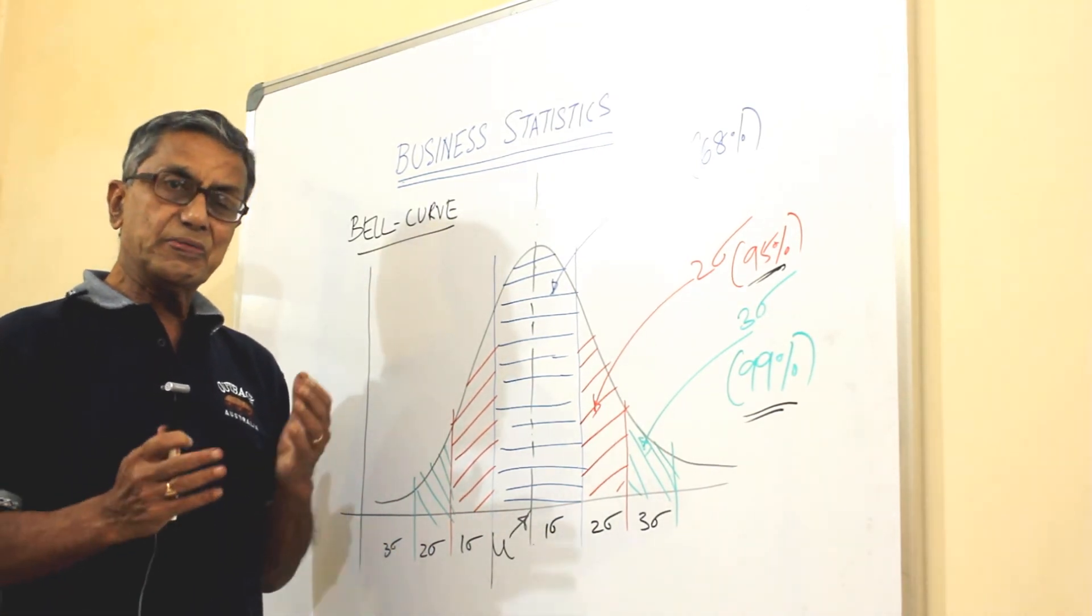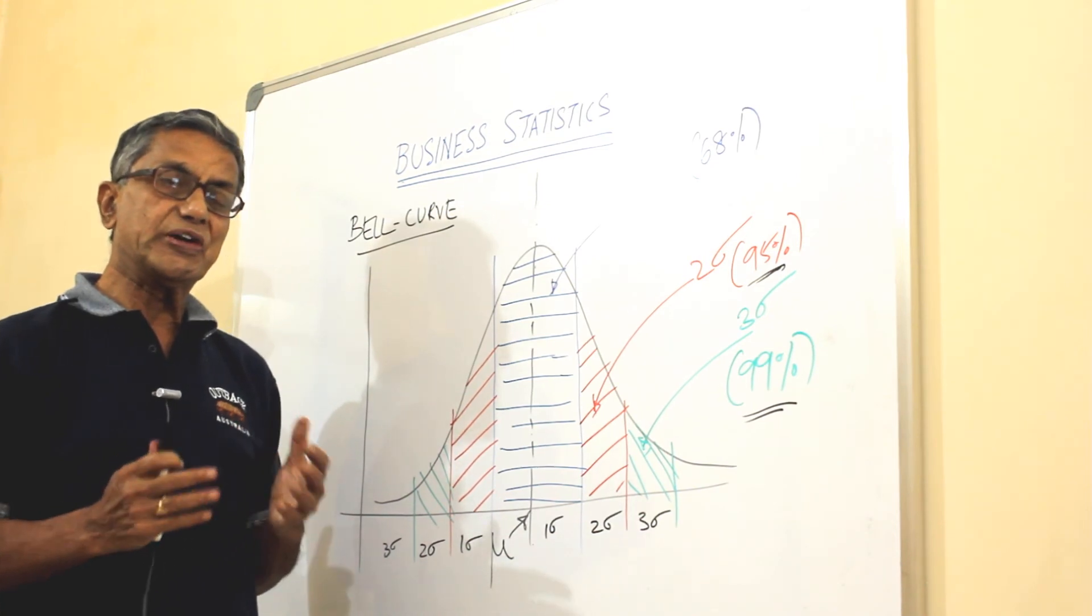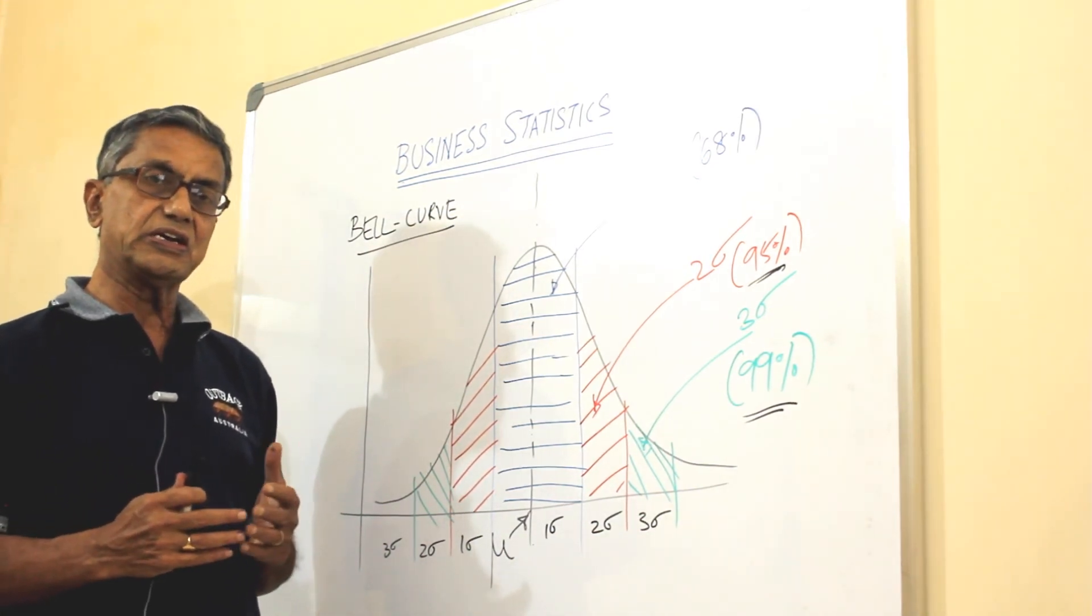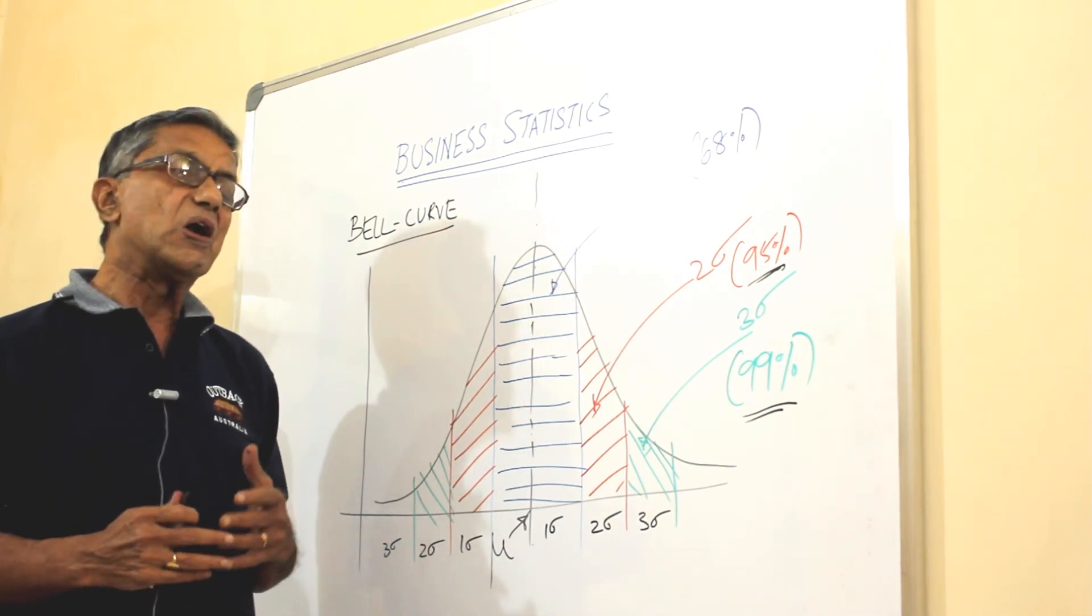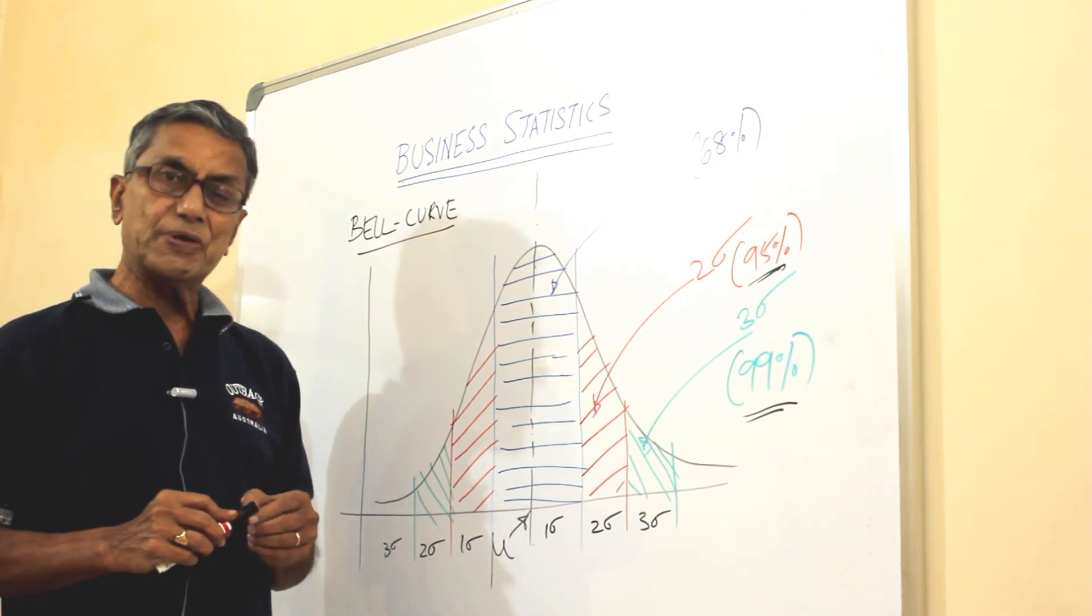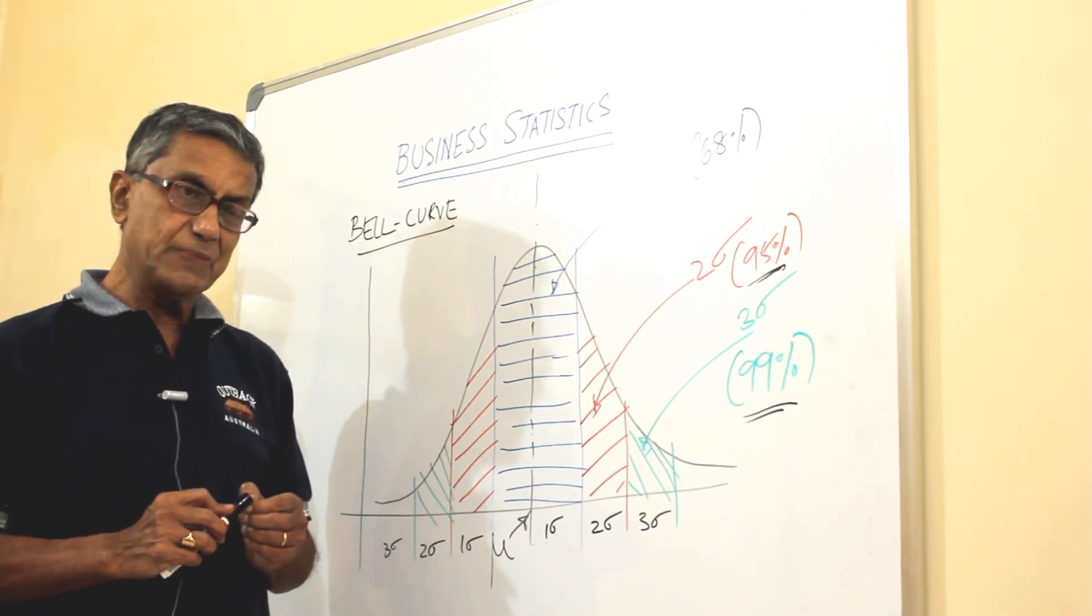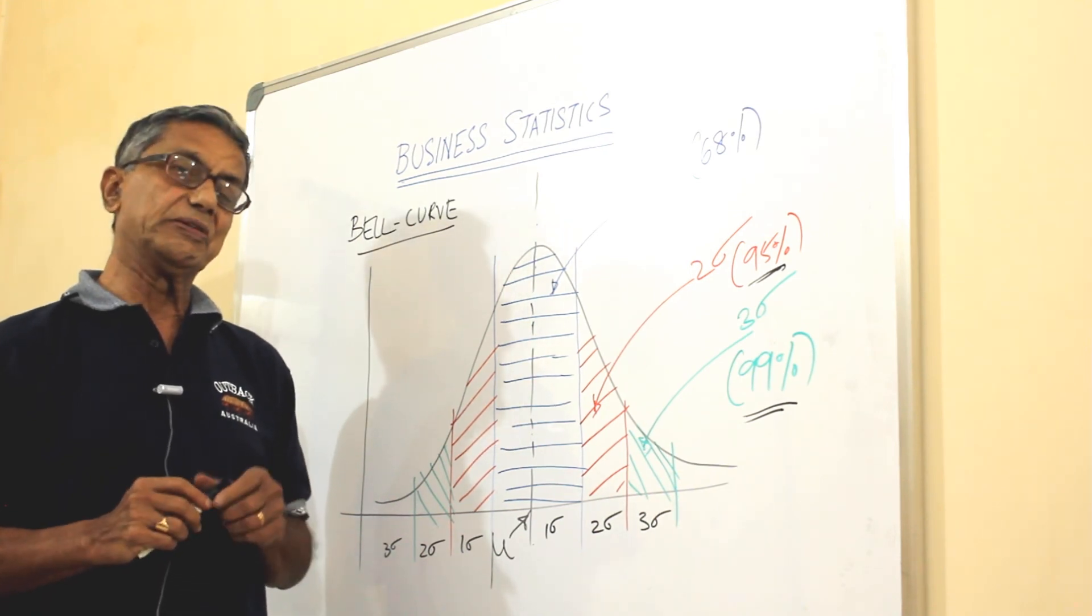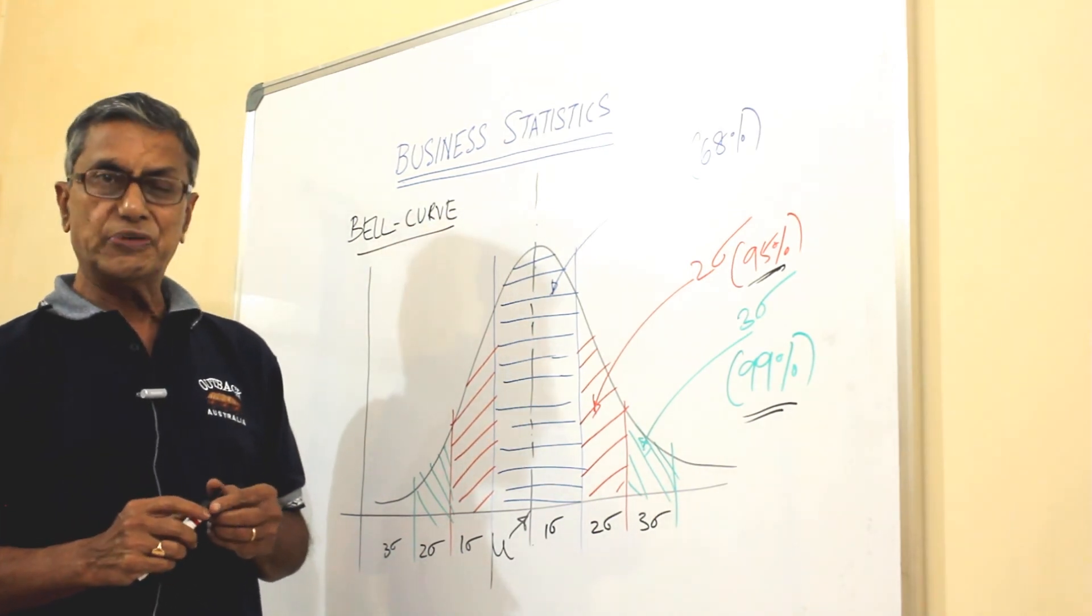So it could have given by this time a good idea about what we talk with one standard deviation, two standard deviation and three standard deviation, what they mean and what it signifies. And we have seen a couple of examples. I hope you liked them and we will move on further with frequency distribution.